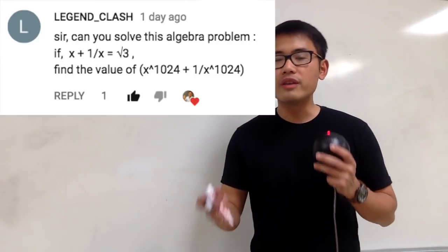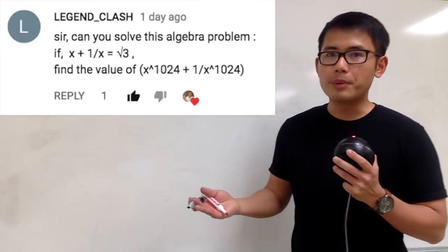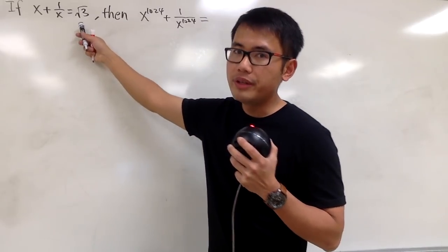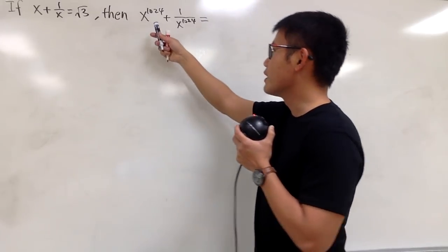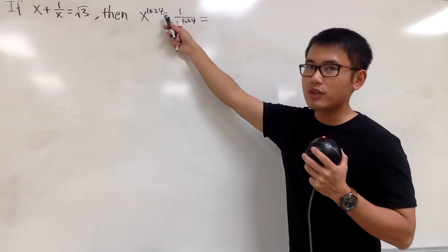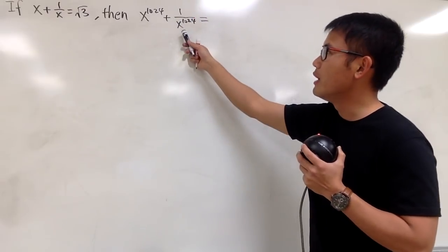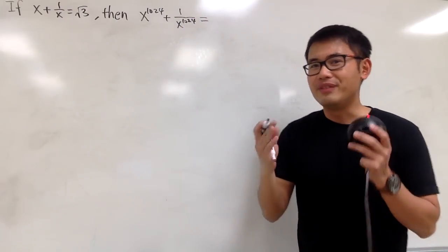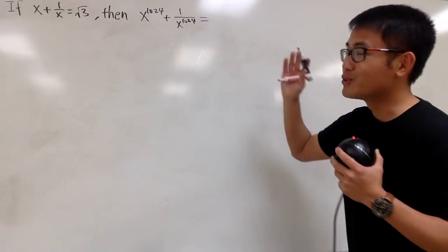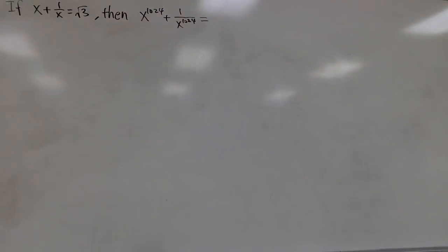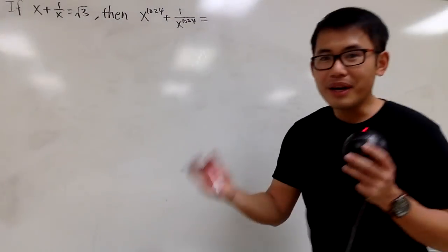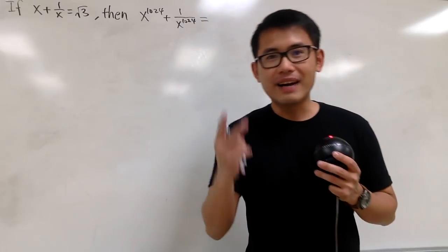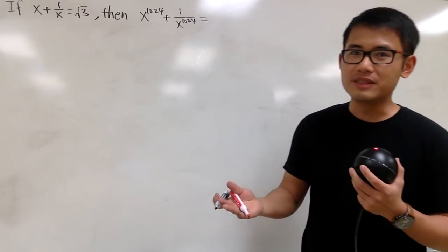Let's do some math for fun! Here we have a question from one of my subscribers. It says: if x plus 1 over x is equal to square root of 3, then we're trying to find out the value for x to the 1,024th power plus 1 over x to the 1,024th power. If you haven't already, just pause the video and try this first. I have two ways, and I will show you both in this video.